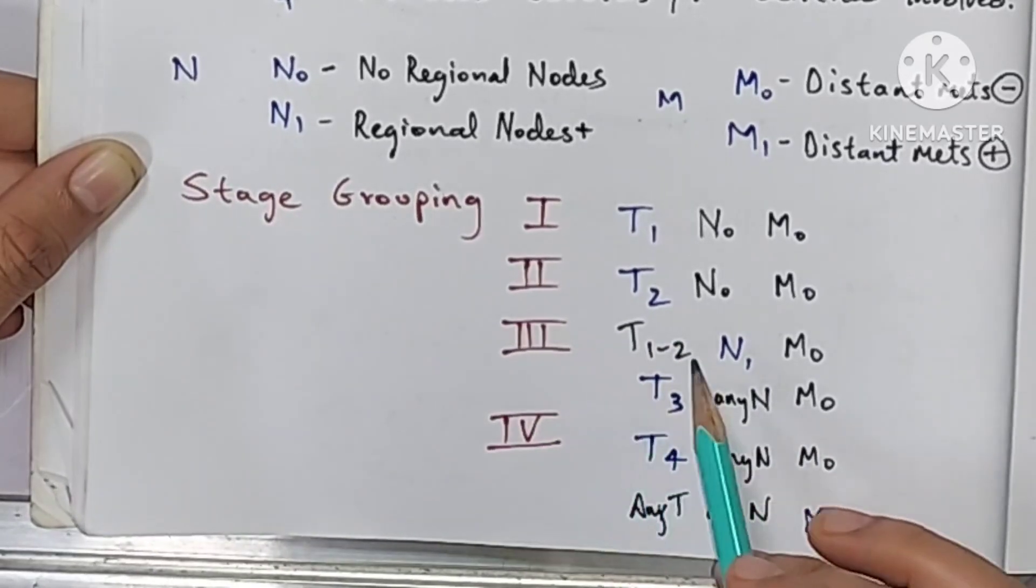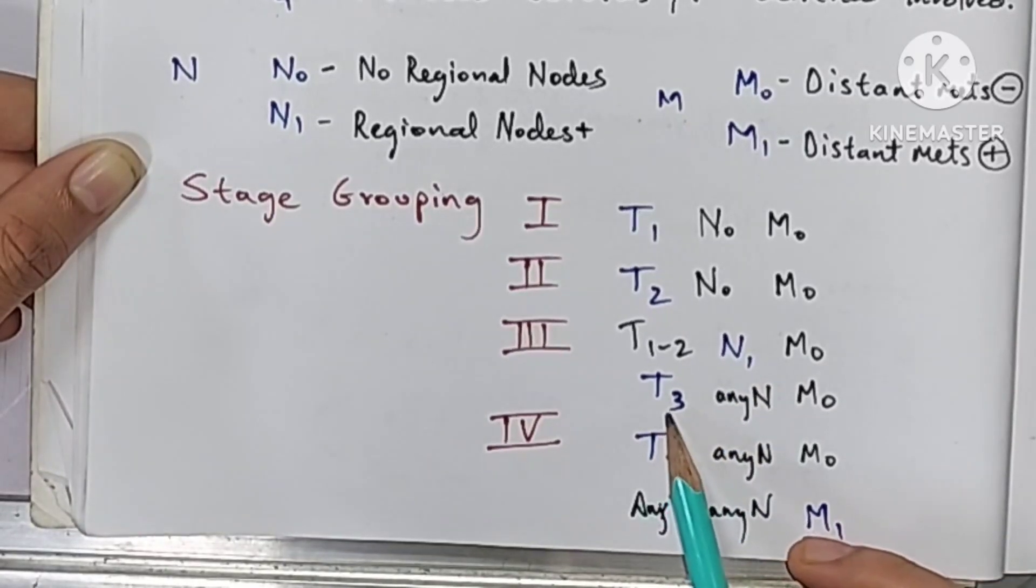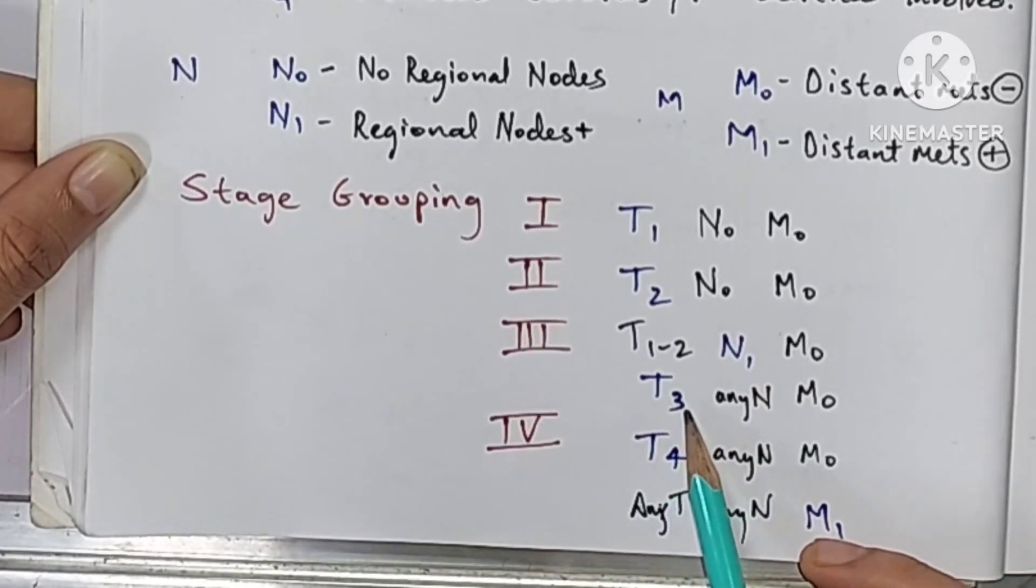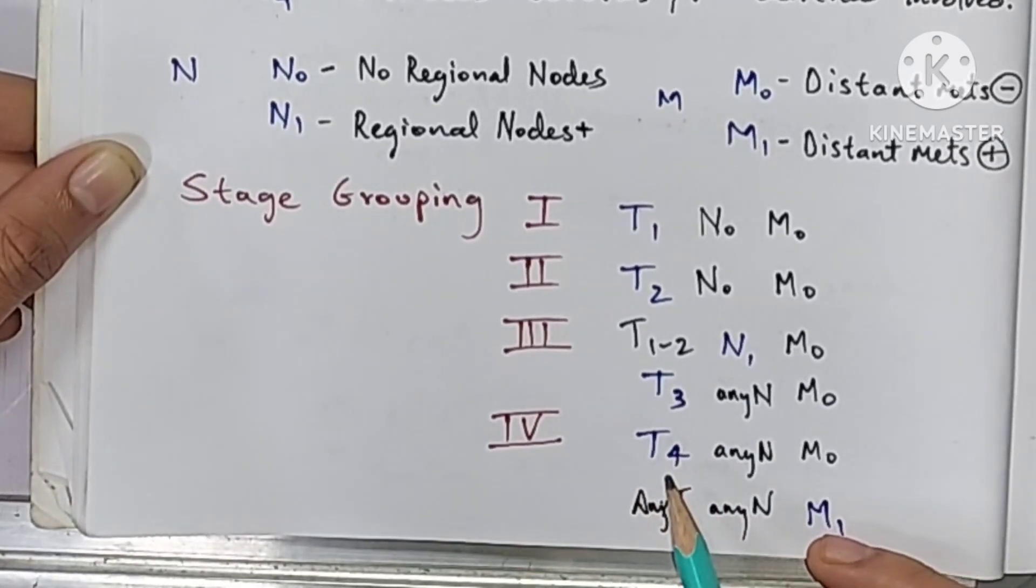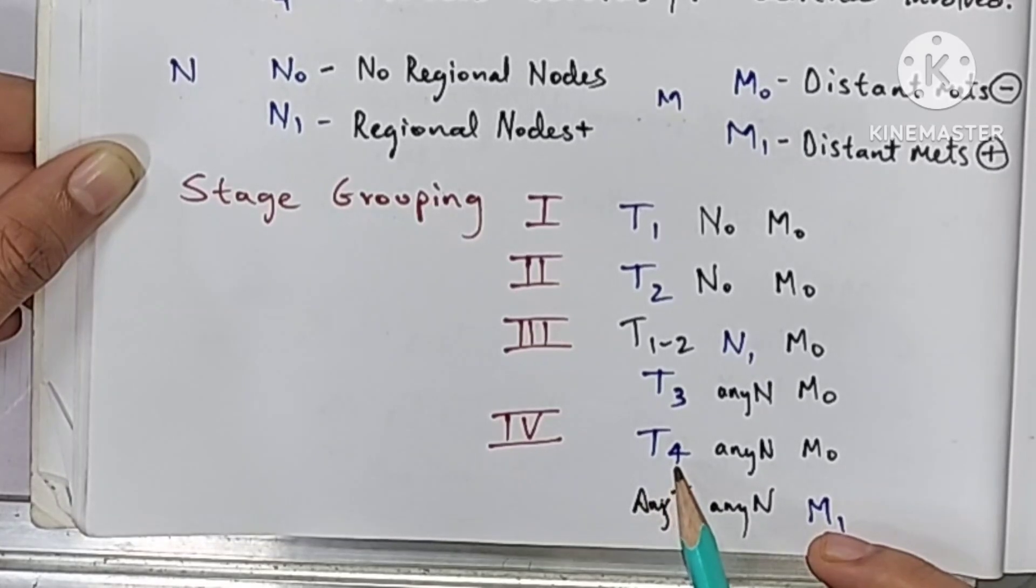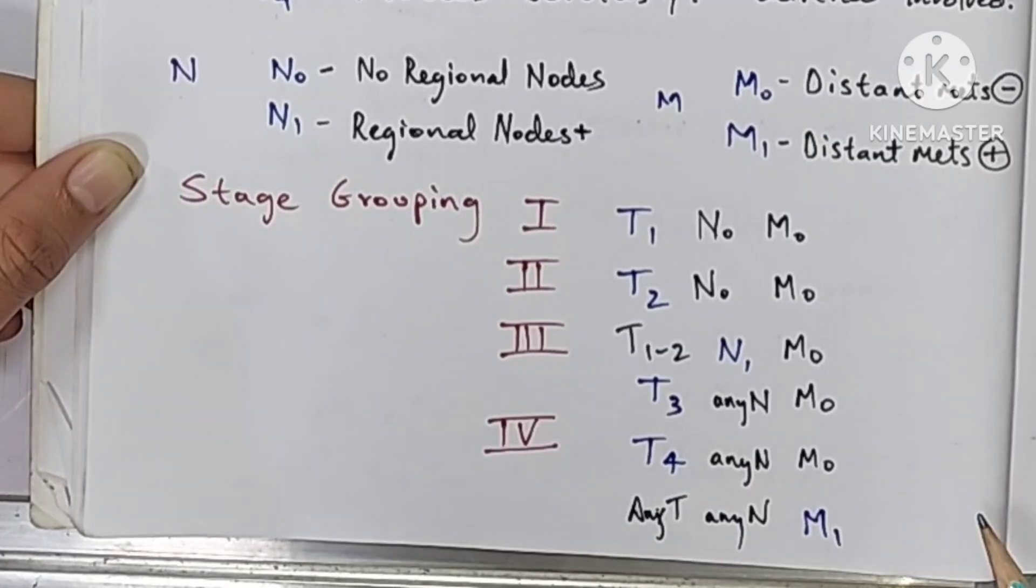Stage 3 when there is regional lymph node involvement or the tumor is involving the vein or the perinephric fat. Stage 4 when there is gerota's fascia involvement or there is distant metastasis. Thank you.